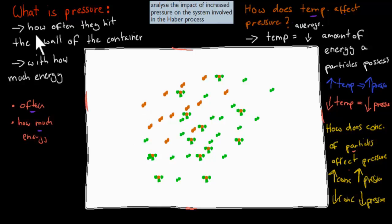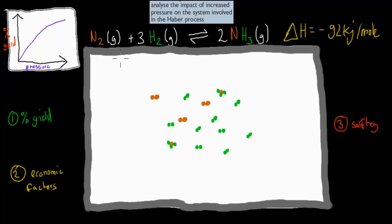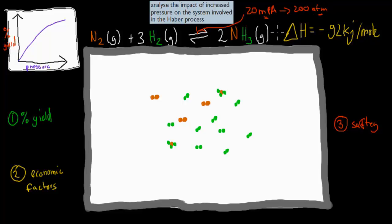That was just an introduction to pressure. The reason why I need to know that is because the dot point says: analyze the impact of increased pressure on the system involved in the Haber process. So what will it mean if we increase our pressure on the system of the Haber process? We've got the Haber process here, which is making ammonia from nitrogen gas and hydrogen gas — and it's also an exothermic reaction. We use about 20 megapascals of pressure, which equals 200 atmospheres. I'm giving both because some books use atmospheric pressure, some use megapascals. Different plants will have different pressures, but it's going to be roughly this pressure.